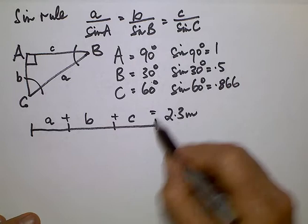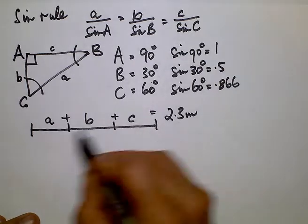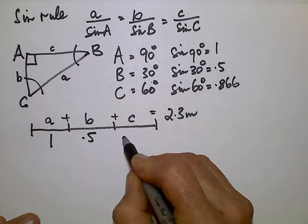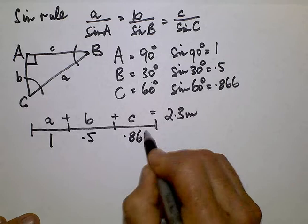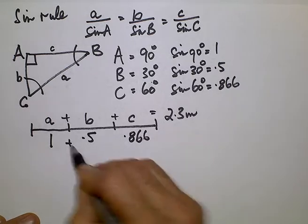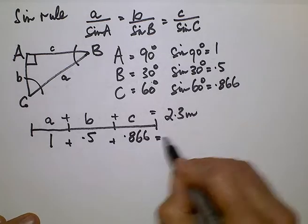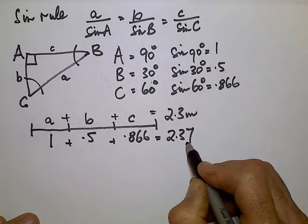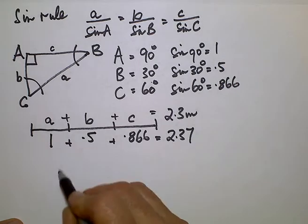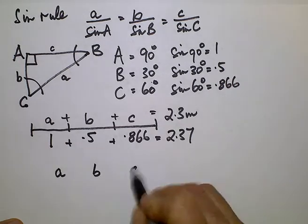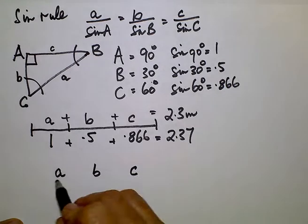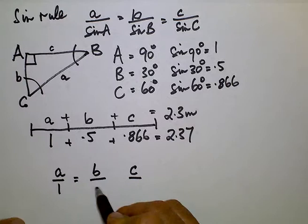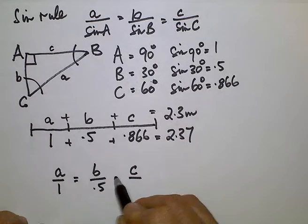And if we put these values into the equation, we can say that part is 1, this part is 0.5 and that part is 0.866. So if we add those proportions together, we come up with 2.37. So the proportions of A, B and C are A divided by 1 equals B divided by 0.5 equals C divided by 0.866.